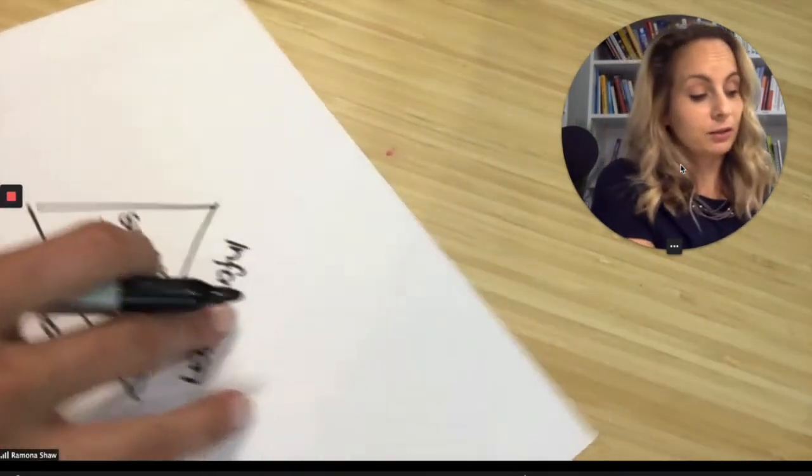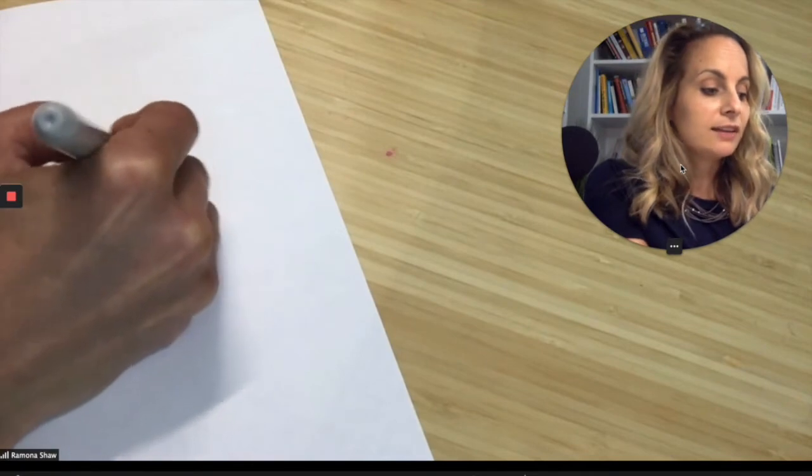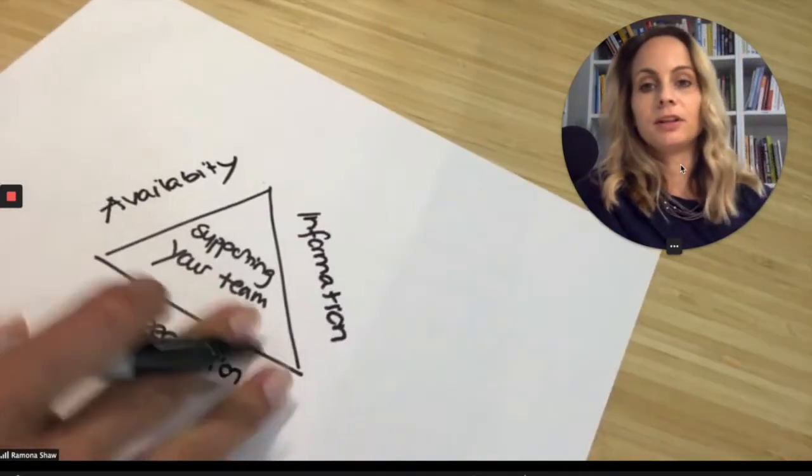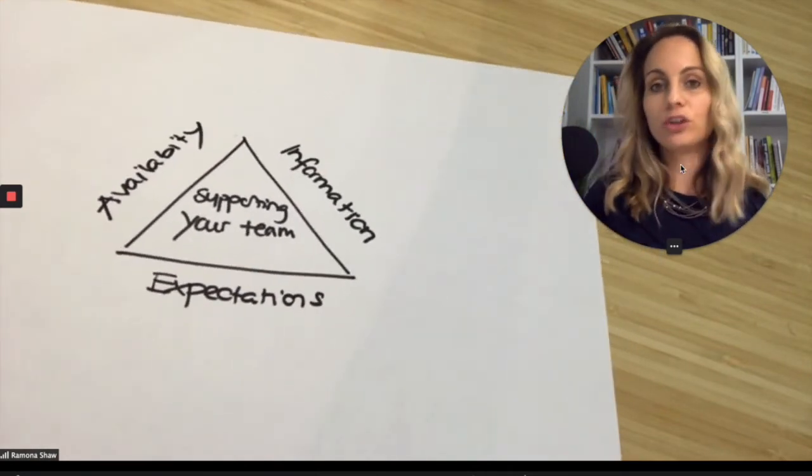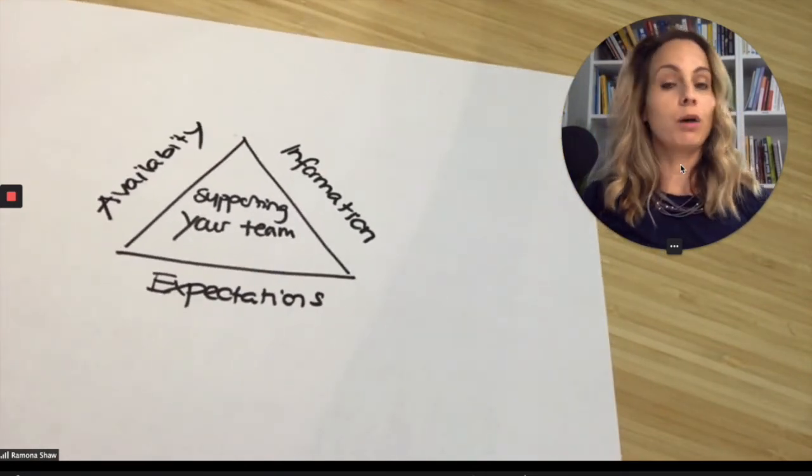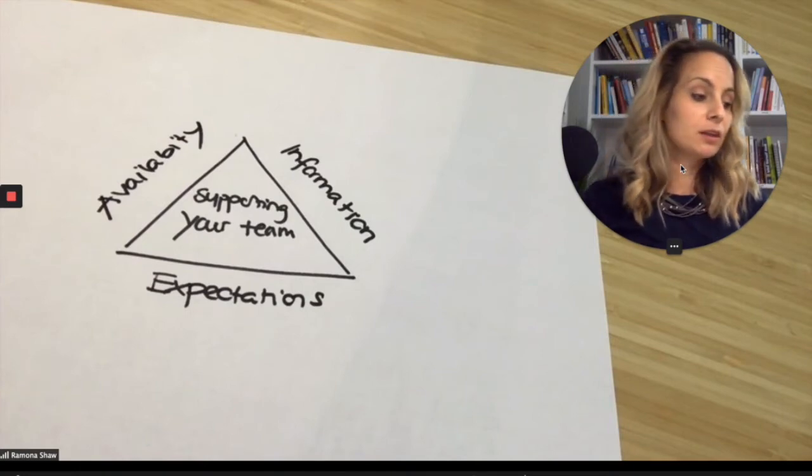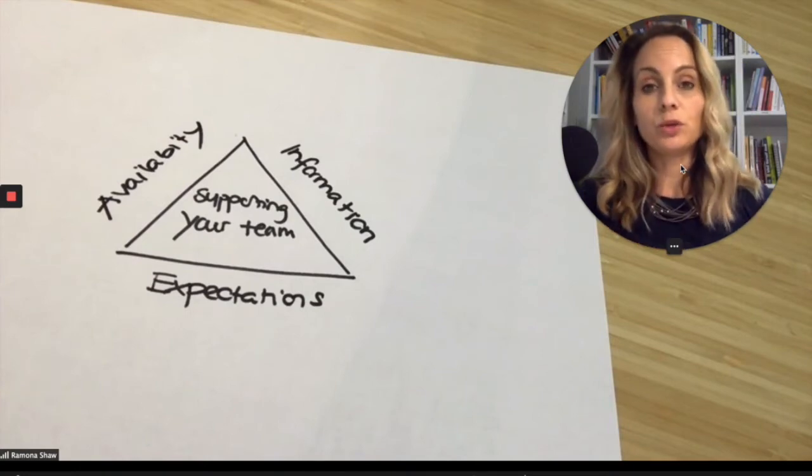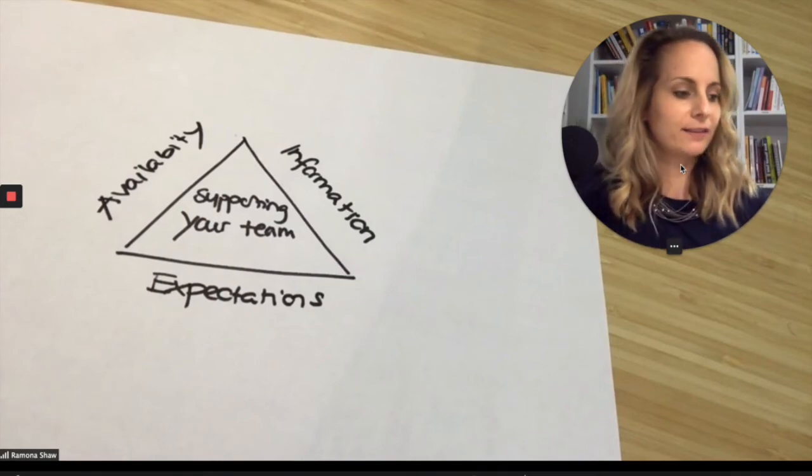And then the third pillar, when it comes to supporting your team, has to do with availability. This is availability of your time, your presence with the team, how often you're meeting them, when are you meeting them, what for are you meeting them, and how do you need to show up to best support the team with your actual presence and attention.